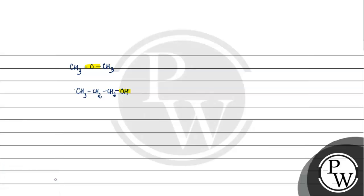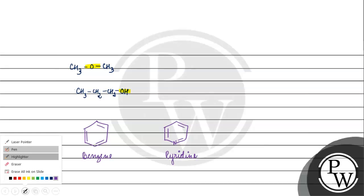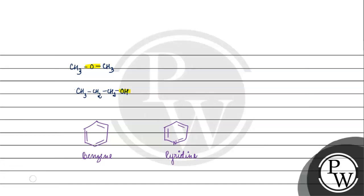Like a benzene ring — benzene contains carbon atoms. But if carbon has other atoms like nitrogen, that gives us pyridine. In pyridine, nitrogen replaces a carbon, and nitrogen is the hetero atom.